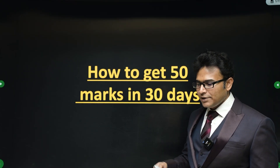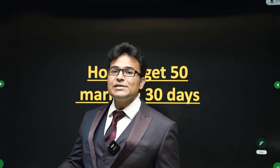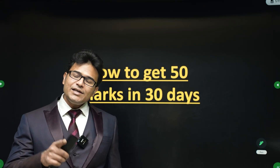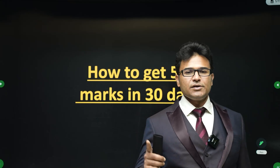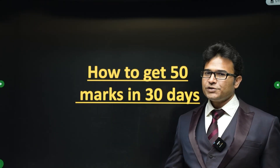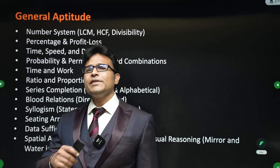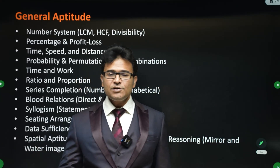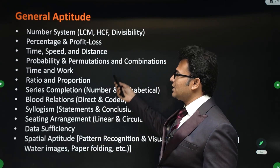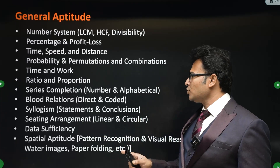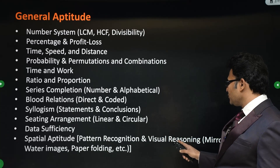From all the subjects, I've identified the topics you should focus on to get at least 50 marks. You'll definitely get it if you follow what I'm going to say. First is aptitude — aptitude is the most scoring subject, so you should not leave anything out. But if you don't have time, out of 40 topics I've selected 11. The most important topic for aptitude is number series, pattern recognition, and visual reasoning.